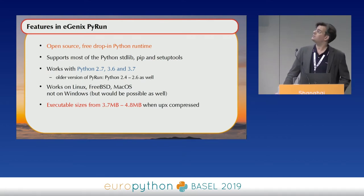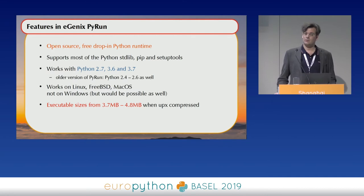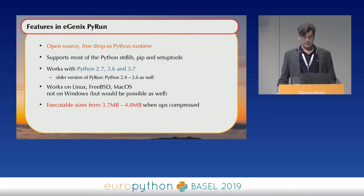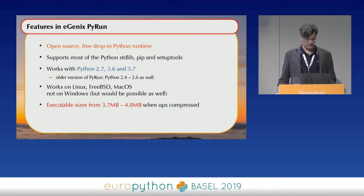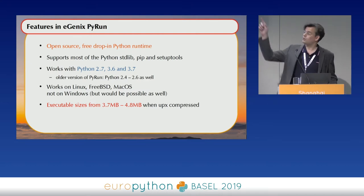So now I have a PyRun. It's open source. It's a more or less drop-in for a standard Python runtime. It doesn't use hundreds of megabytes in the file system and you don't have to install it anywhere. It works with Python 2.7, 3.6, and 3.7. It also supports lots of older versions — 2.4 is the oldest version I still support, not in the current version but in previous ones. The executable size is between 3.7 megabytes for Python 2.7 and 4.8 megabytes, using UPX compression.